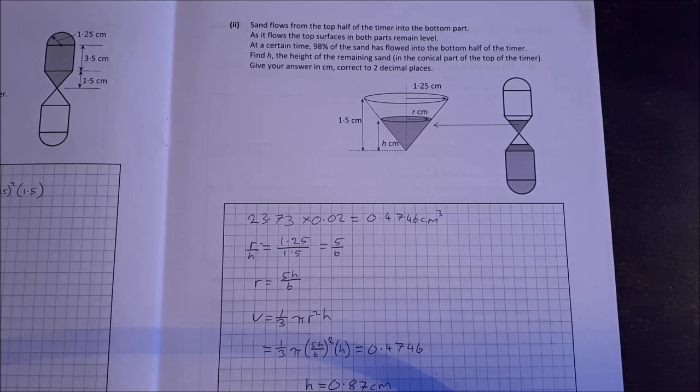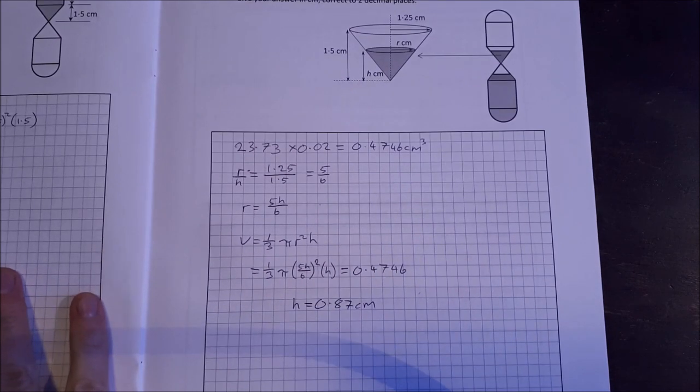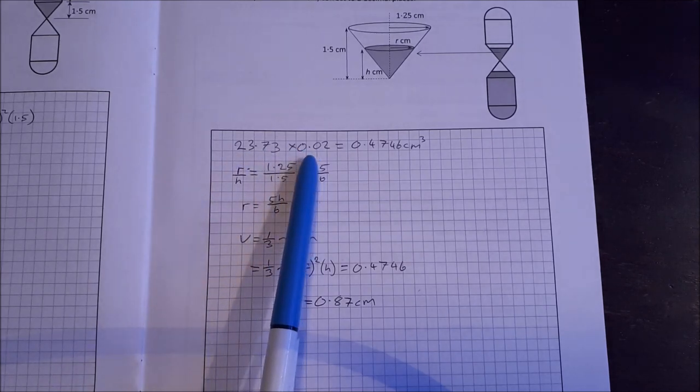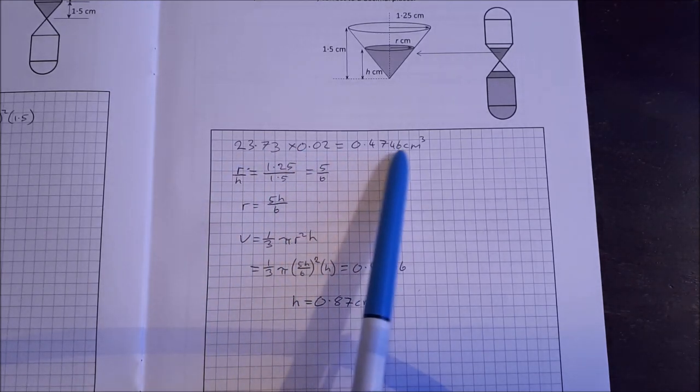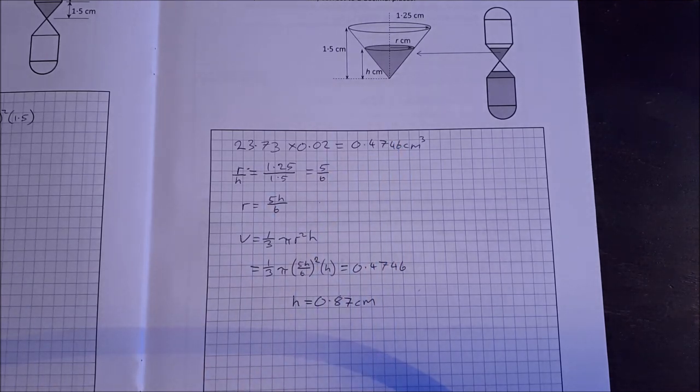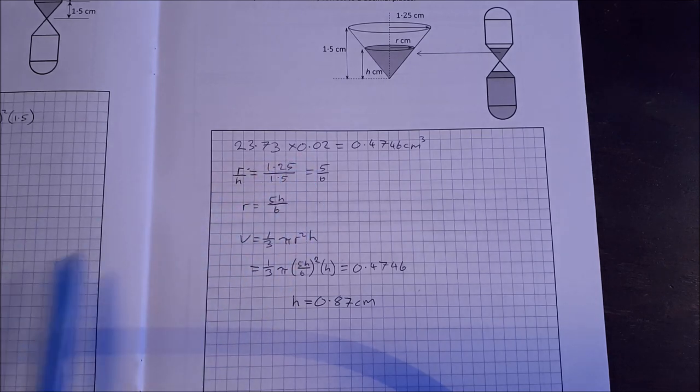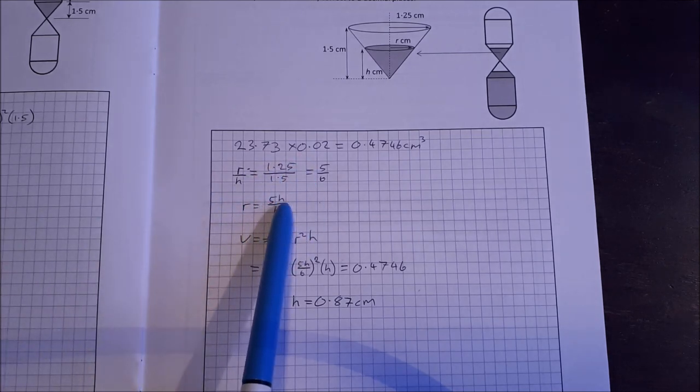Sand flows from the top half of the timer to the bottom part. As it flows, the top surfaces in both parts remain level. At a certain time, 98% of the sand has flowed into the bottom half of the timer. Find H, the height of the remaining sand in the conical part of the top of the timer. Give your answer in centimeters correct to two decimal places. So we have 98% gone. That means we have 2% left. So 23.73 times 0.02 is that much there. That's how much sand is left. Then R over H. We basically use triangles here. So R over H is 1.25 over 5. So 5 over 6. We can write R in terms of H. R is 5H over 6.